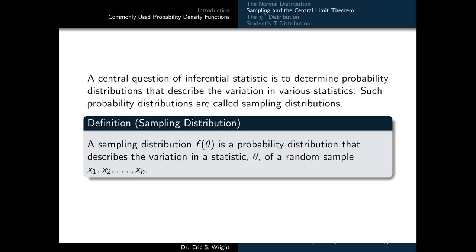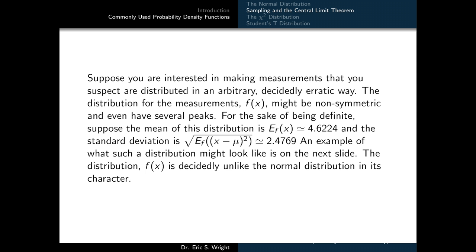A central question of inferential statistics is to determine probability distributions that describe the variation in various statistics. Such probability distributions are called sampling distributions. A sampling distribution f of theta is a probability distribution that describes the variation in a statistic theta computed from a random sample x1, x2, through xn. To see why sampling distributions are important and useful, consider a scenario where you're making measurements distributed in an arbitrary, decidedly erratic way.